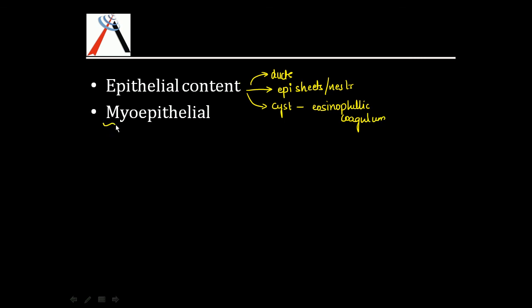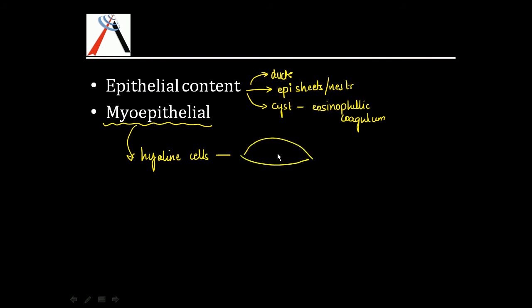The myoepithelial component may form hyaline cells, which are swollen myoepithelial cells whose cytoplasm is filled with homogeneous eosinophilic material — the term 'hyaline' meaning glass-like. The myoepithelial cells can also be surrounded by cartilaginous material.